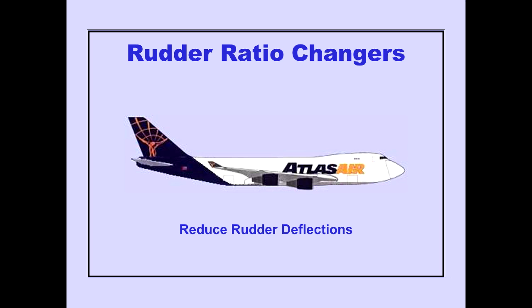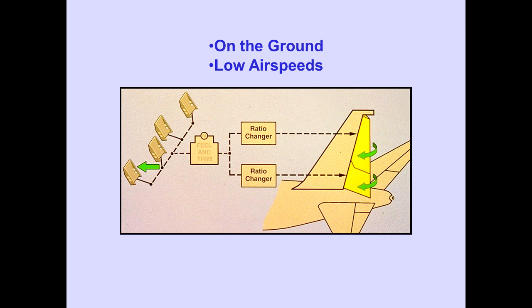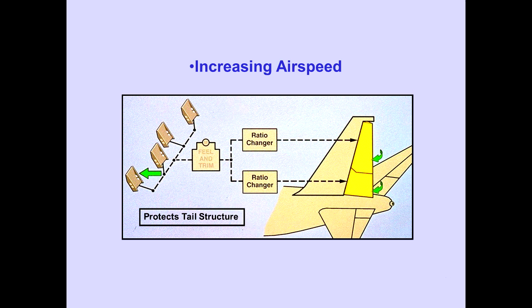The rudder ratio changers reduce rudder deflections as airspeed increases. There is a separate rudder ratio changer for each rudder. The upper ratio changer controls the upper rudder, and the lower ratio changer controls the lower rudder. On the ground and at low airspeeds, pushing a rudder pedal to the stop results in full deflection of the rudder surfaces. As airspeed increases, the ratio changers gradually reduce rudder surface response to pedal inputs. This protects the vertical tail structure from excessive stresses.